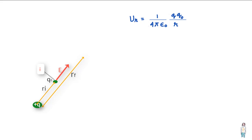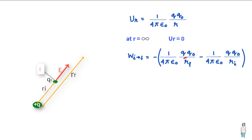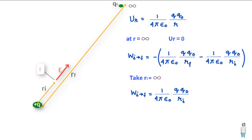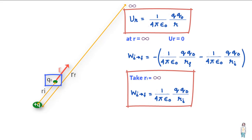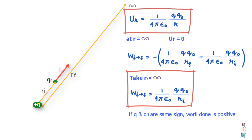The earth's surface becomes our reference point for gravitational potential energy. In the same way, we need to establish a reference point where the electric potential energy of the system is zero. You can see that if we take R as infinity, the U value becomes zero. If we look at the expression for work done when moving the charge from I to F and take R_F as infinity, then the work done to move the charge from I to infinity equals the potential energy of the charge at position I.